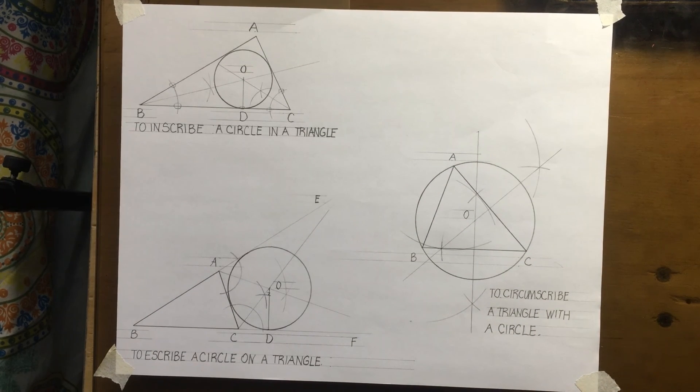All right, so that is the construction to circumscribe a triangle with a circle. Thank you guys for following.